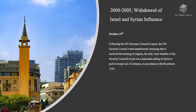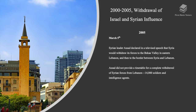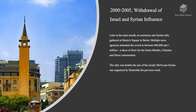On March 5th, Syrian leader Assad declared in a televised speech that Syria would withdraw its forces to the Bekaa Valley in eastern Lebanon, and then to the border between Syria and Lebanon. Assad did not provide a timetable for a complete withdrawal of Syrian forces — 14,000 soldiers and intelligence agents — from Lebanon. Later in the same month, an enormous anti-Syrian rally gathered at Martyrs Square in Beirut. Multiple news agencies estimated the crowd at between 800,000 and 1 million, representing the Sunni Muslim, Christian, and Druze communities. The rally was double the size of the mostly Shiite pro-Syrian one organized by Hezbollah the previous week.